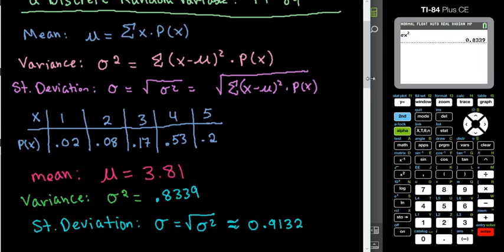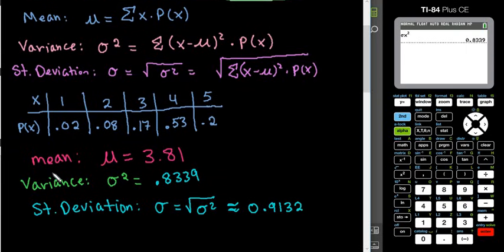Okay, so for this, if you are using the TI-84, you must first find the mean and the standard deviation. Then you would square the standard deviation to get the variance.